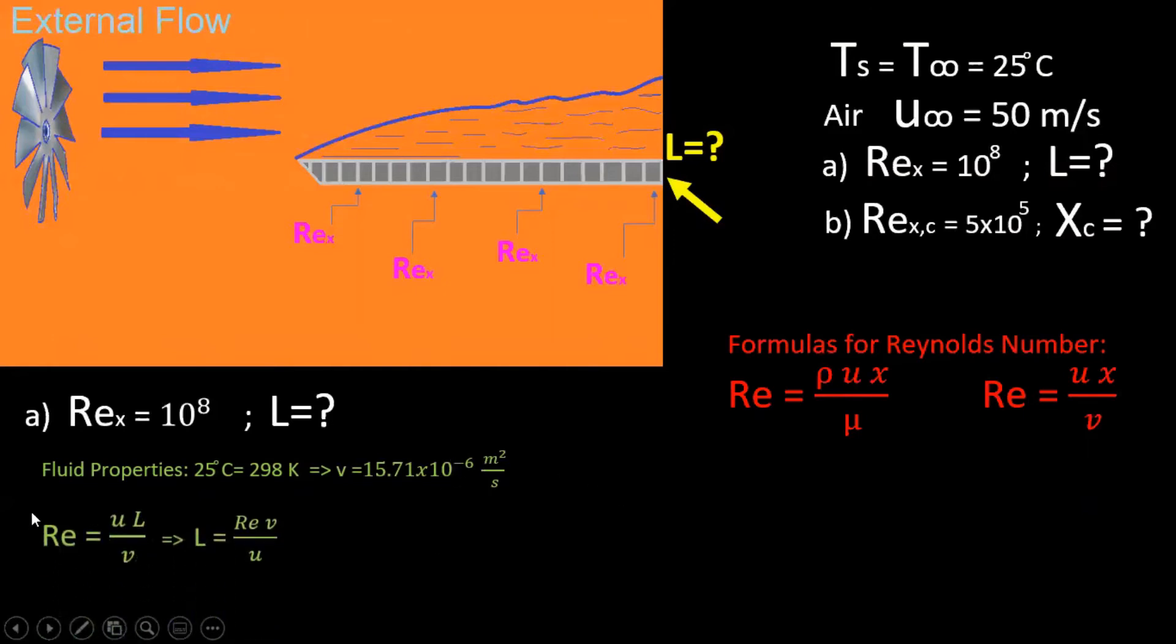We're gonna go back, take our formula: the Reynolds number equals the velocity of the fluid times length over kinematic viscosity. We're gonna solve for length since that's what we are looking for, and I'm gonna go ahead plug everything in - everything we know: Reynolds number, kinetic viscosity, and velocity.